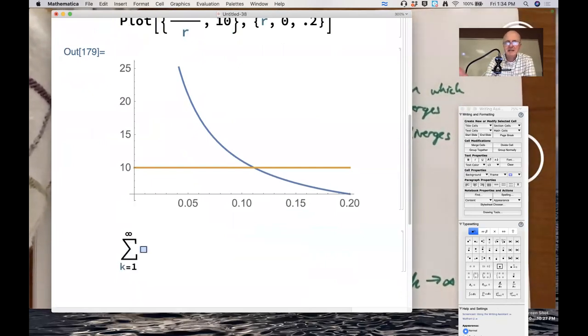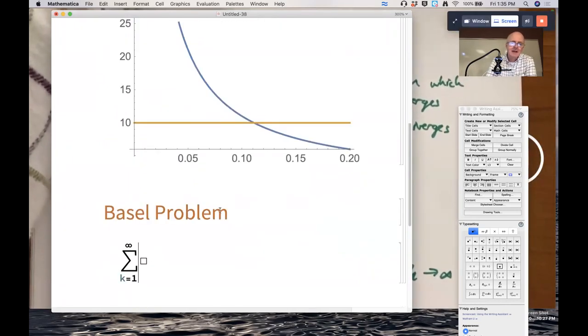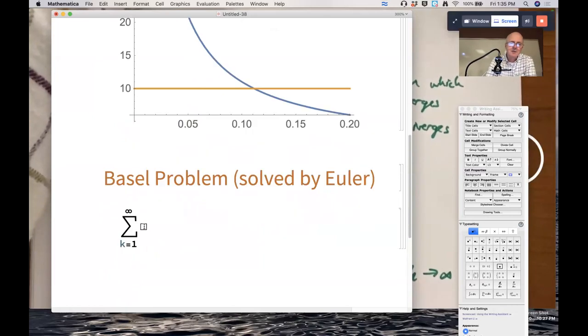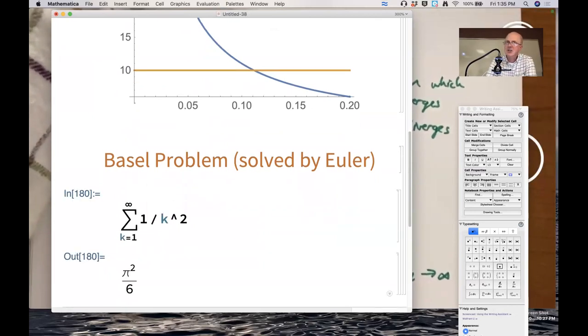I spelled it wrong. It's actually B-A-S-E-L instead of A-L. Euler, again, that was solved by Euler. Or just Euler. Figured out that this equals pi squared over 6. Shockingly, okay?